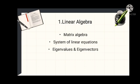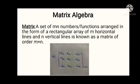Coming to matrix algebra, what is a matrix? A set of m×n numbers or functions arranged in the form of a rectangular array of m horizontal lines and n vertical lines is known as a matrix, and the order is m by n. We can see the image in this picture. The order m by n means m number of rows and n number of columns.